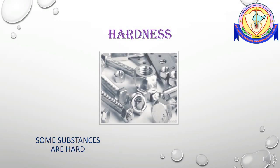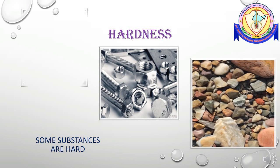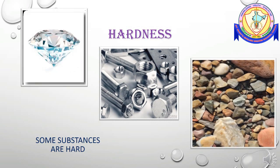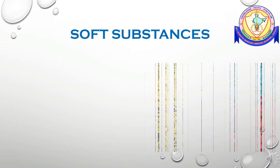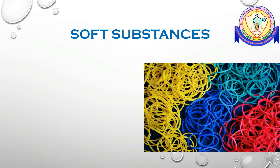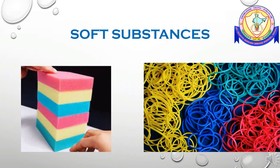Can you press materials like iron or stone, or scratch on them? No — because they are hard substances. Some materials can be compressed easily; they are called soft substances. Sponge and rubber are examples of soft substances.